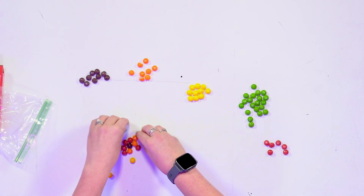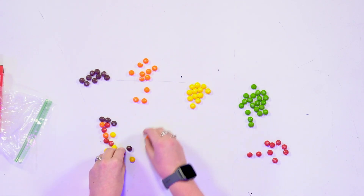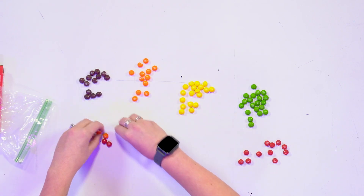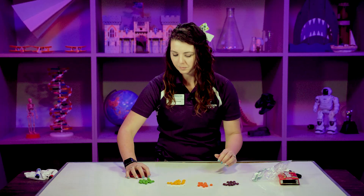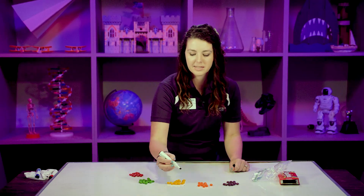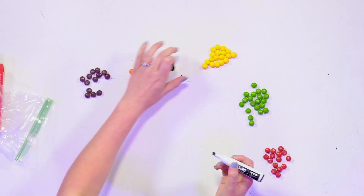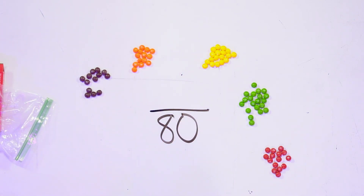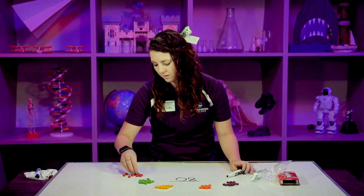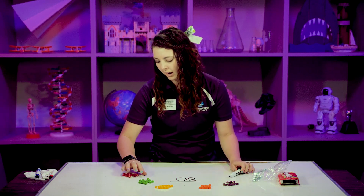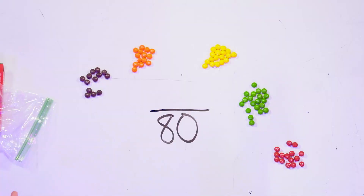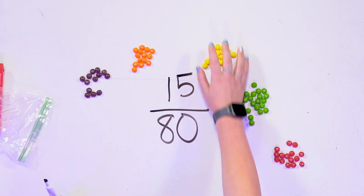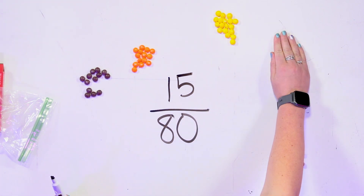Red is my favorite. The red Skittles are going to be the one we find a fraction for. I've got them all sorted here. Like I said, the denominator, the bottom, is 80, so we're going to put a big 80 on the bottom. That's my total number of Skittles. And if I count my red ones, I've got 15. That's my part, so that goes on top: 15 over 80. That's the fraction of red Skittles in the box.